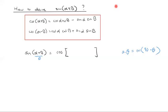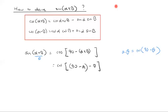There are a few other options, but 90 minus theta is probably one of the easier ones. So we consider sine of alpha plus beta as cosine of 90 minus alpha plus beta, which is the same as cosine of 90 minus alpha minus beta. We can put a bracket around the 90 minus alpha, thinking of it as our x, and beta as our y.